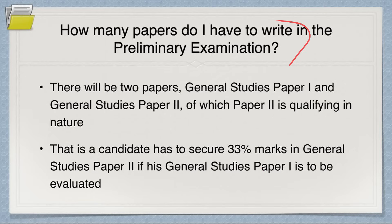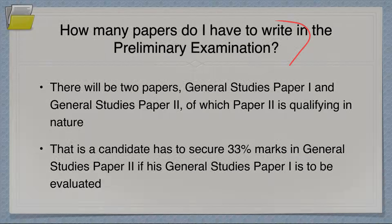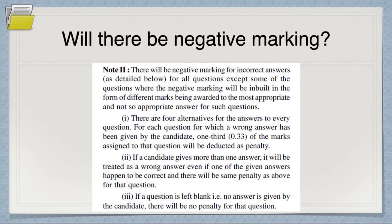How many papers do you have to write in the preliminary examination? Two — but focus has to be on Paper 1 unless you are exceptionally weak in Paper 2. For medium students, don't neglect it — give at least one week to Paper 2 so you qualify.